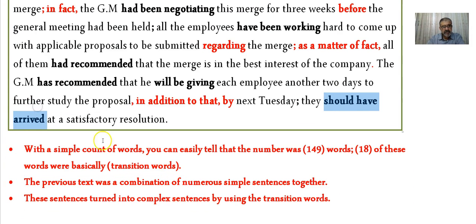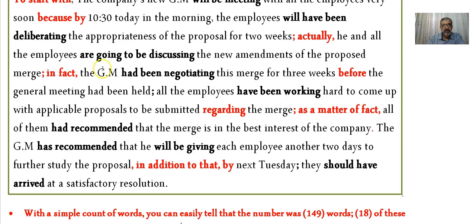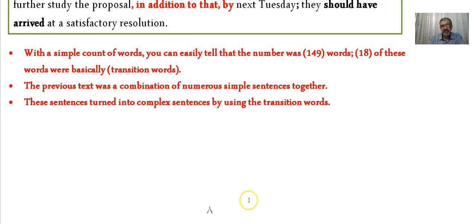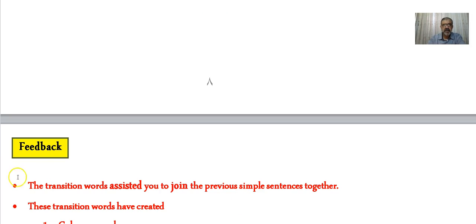With a simple word count, the number was 149 words and 18 of them were transition words, with many punctuation marks also used. The previous text was a combination of numerous simple and compound sentences which turned into complex sentences by using these transition words and then became a text.